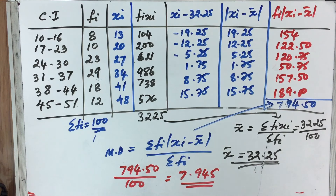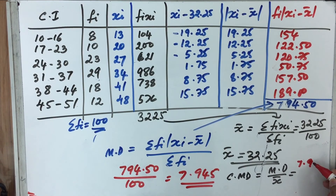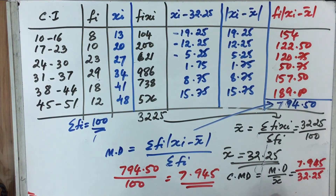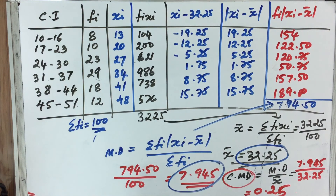From earlier classes, we can also calculate the coefficient of mean deviation. The coefficient of mean deviation equals mean deviation divided by X-bar. So that is 7.945 divided by 32.25, which gives us 0.25. So the three values we have obtained are: the mean is 32.25, the mean deviation is 7.945, and the coefficient of mean deviation is 0.25. This is how we calculate mean deviation for a continuous distribution.